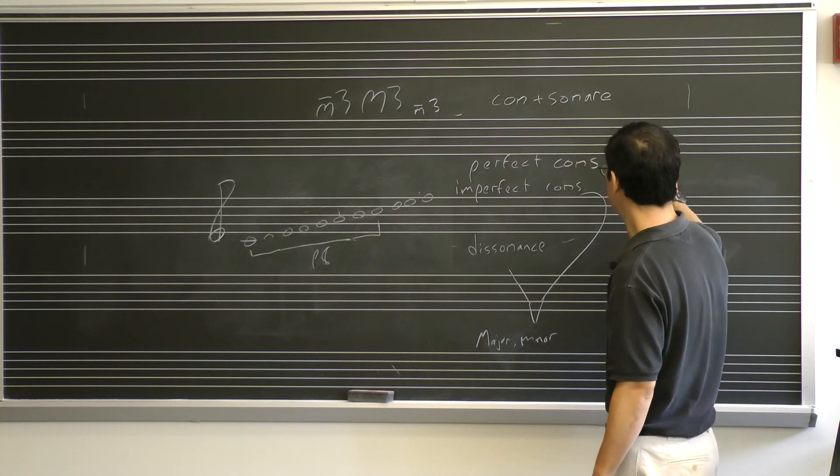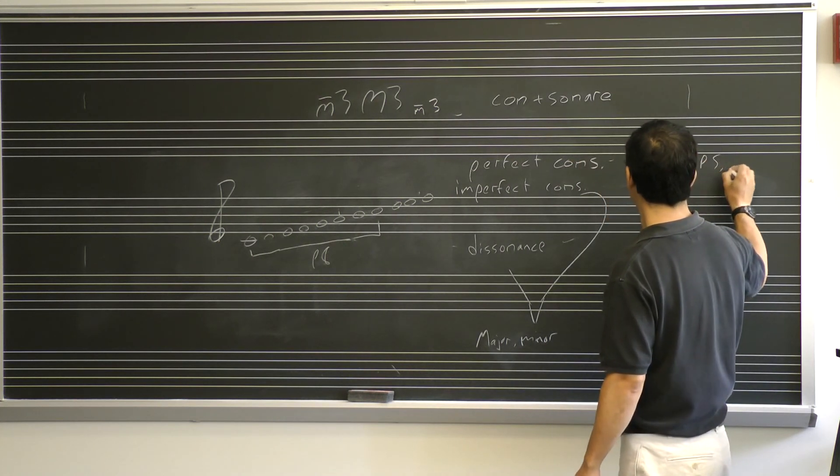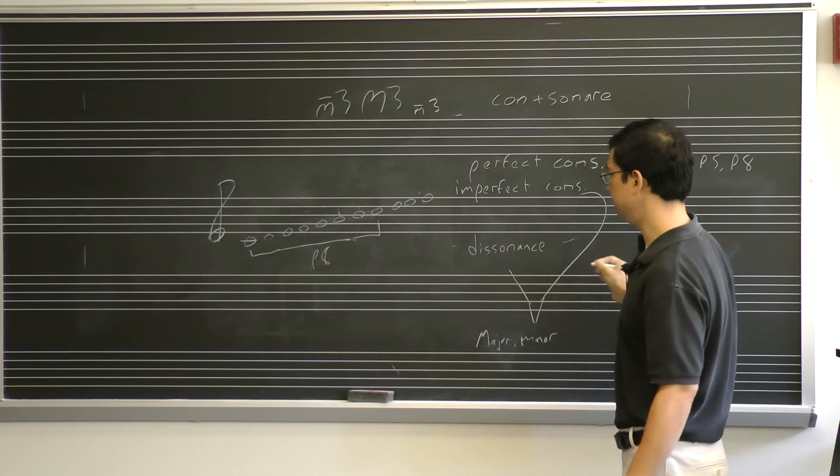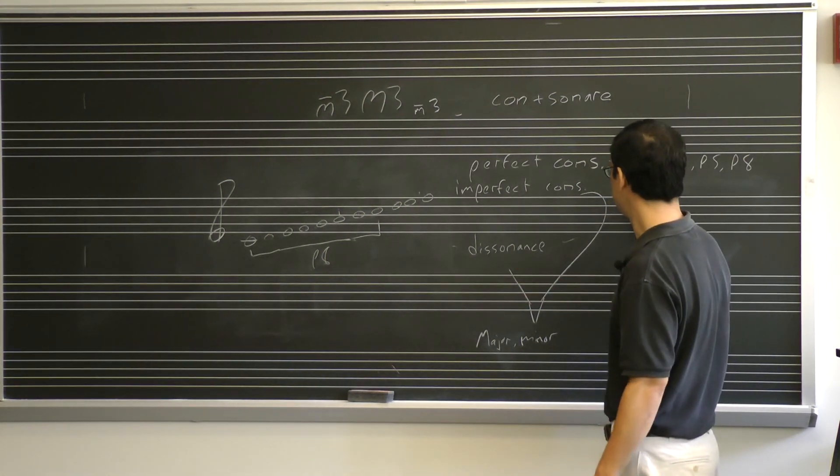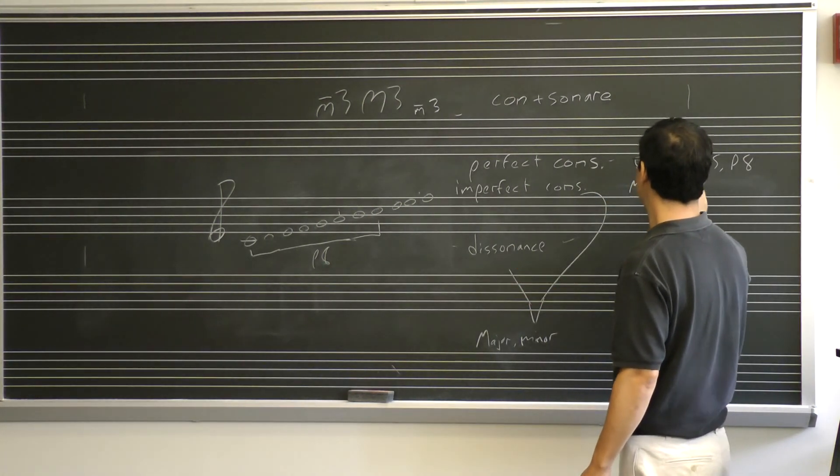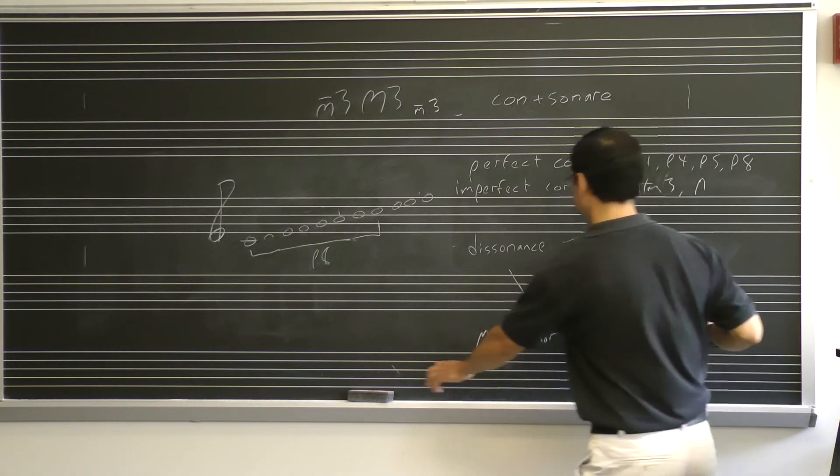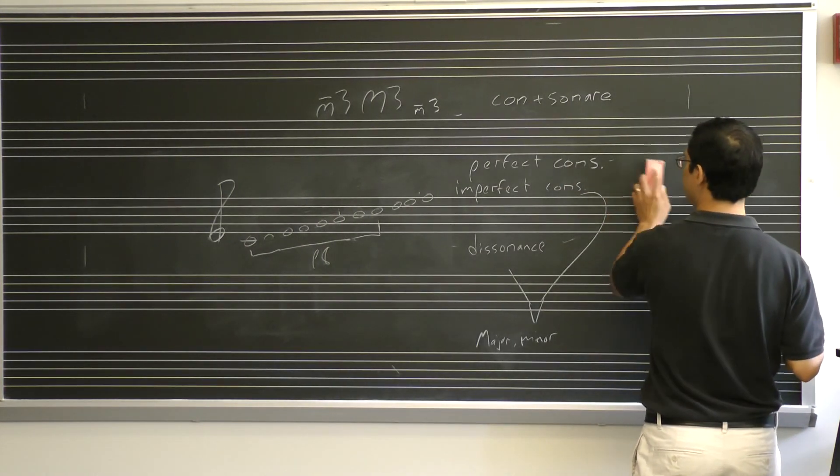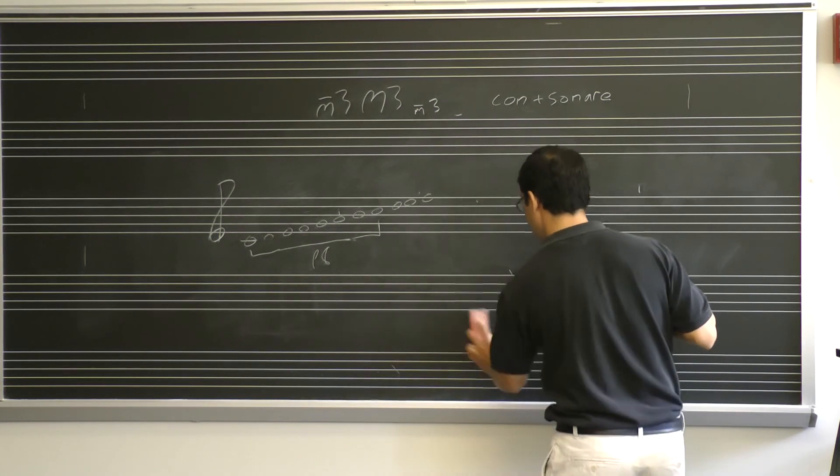Perfect consonances: Perfect unison, perfect fourth, perfect fifth, perfect octave. Imperfect consonances: Major and minor thirds. Oh, sorry. I'm going too far over again. So let me erase a bunch of this.